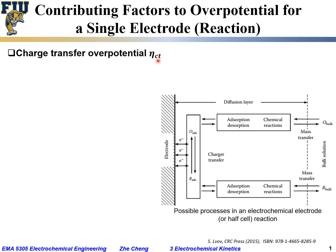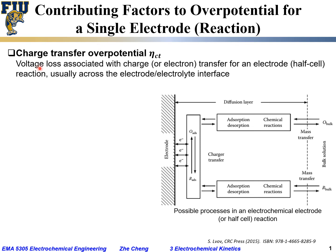We have different processes. The first contribution we would call charge transfer overpotential, or μ_ct — ct for charge transfer, μ for overpotential. One contribution to this overall overpotential will be the so-called charge transfer overpotential, which refers to the voltage loss associated with charge transfer — or what people also call electron transfer — for an electrode reaction or half-cell reaction.